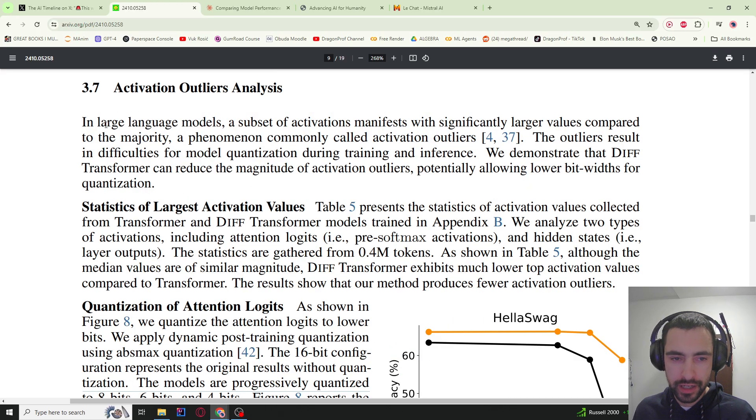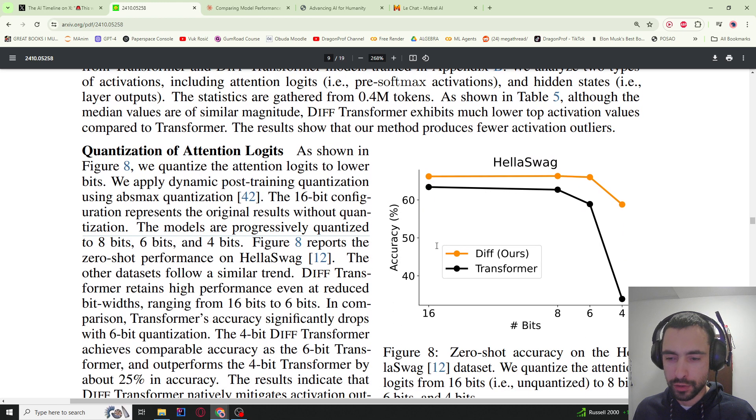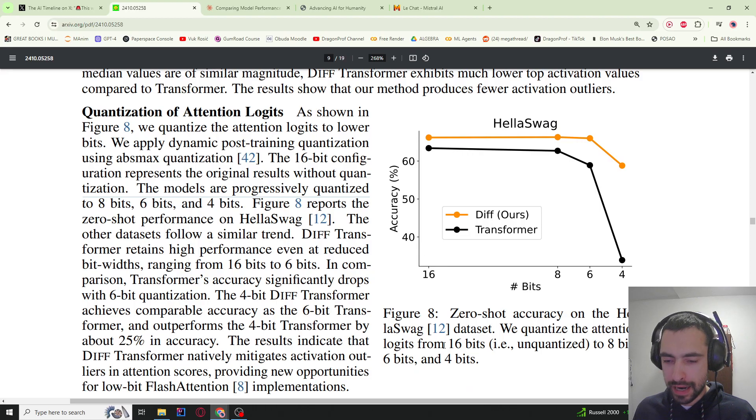They also reduce outlier activations in large language models. A subset of activations manifest with significantly larger values compared to the majority—a phenomenon commonly called activation outliers. The main problem this causes is you cannot quantize. For example, here in this graph they have a model that's 16 bits, and then they quantize it to 8 bits, 6 bits, 4 bits. The accuracy on HellaSwag dataset goes down dramatically as you go from 6 to 4 in the classic transformer. But in diff transformers, it doesn't go down so much because this differentiation is reducing outliers as well.